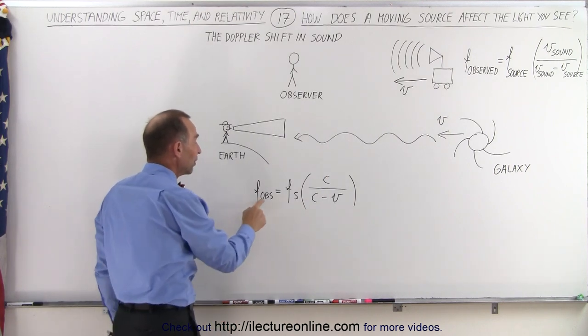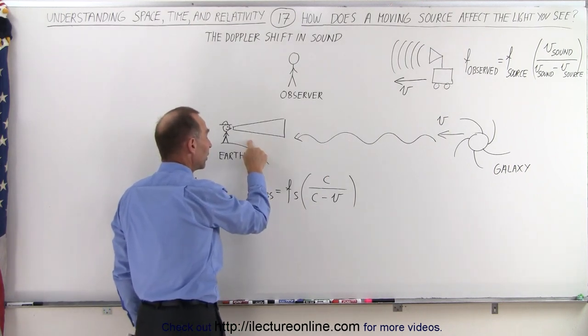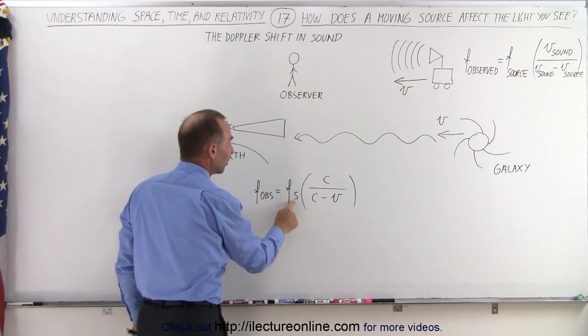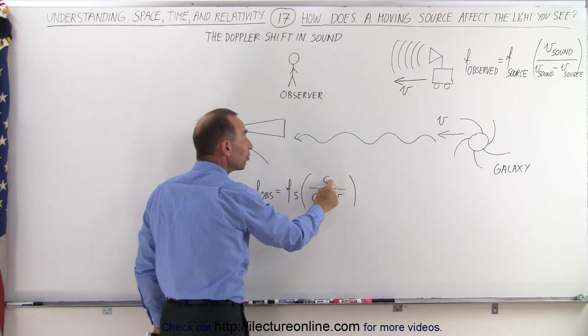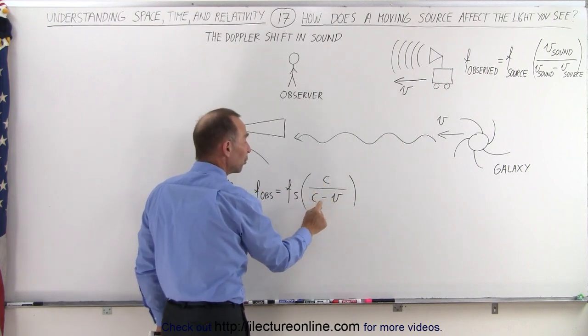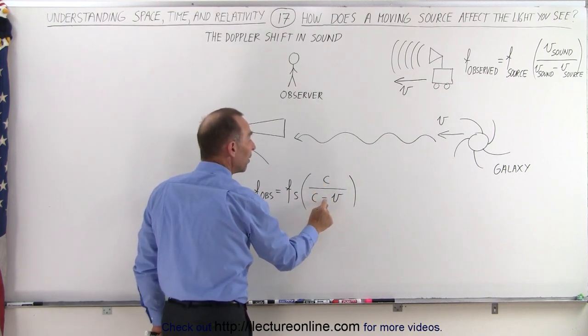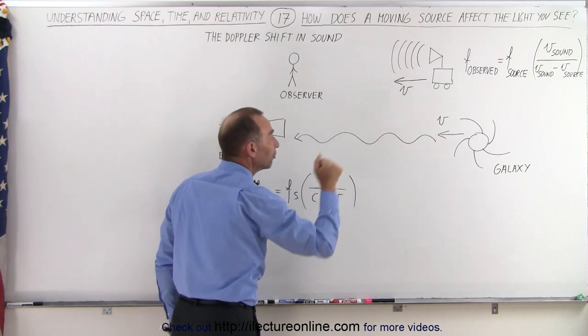And so we can say then that the frequency observed by the observer here is equal to the frequency of the source times the very same ratio: the speed of light in the medium space divided by the difference between the speed of light in space minus the velocity of the source.